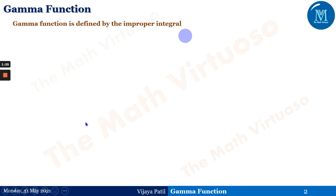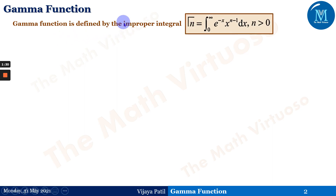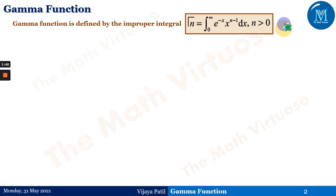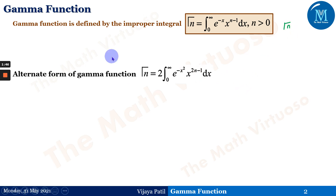What exactly is the gamma function? The gamma function is defined by the improper integral: integration from 0 to infinity of e to the power minus x, times x to the power n minus 1, dx, where n is greater than 0. The notation is gamma of n.